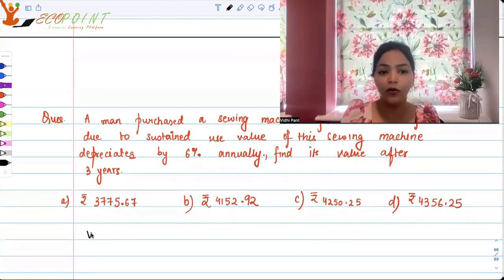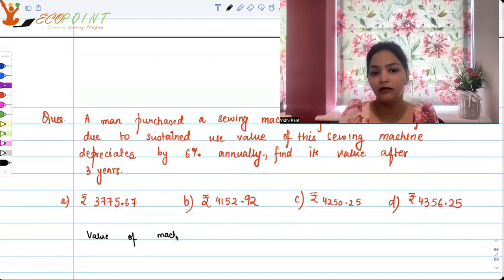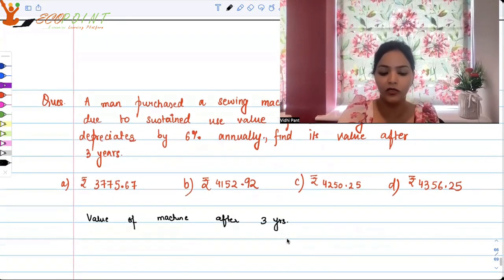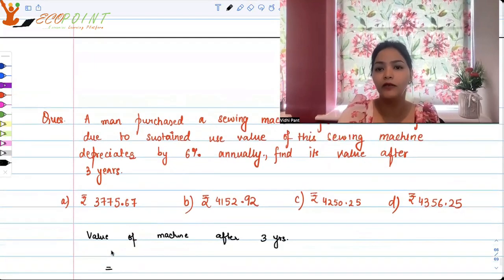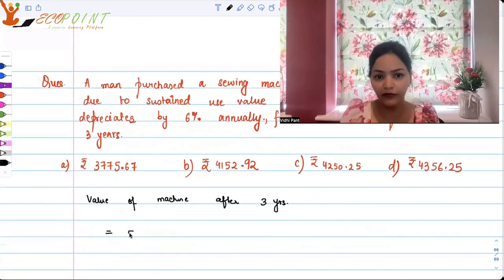So the value of machine after three years. The value of machine after three years will be, how much was it purchased for? 5000.